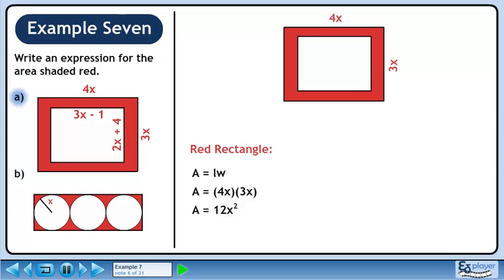Now we'll cut out the middle of the red rectangle. The inner length is 3x minus 1 and the inner width is 2x plus 4.